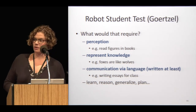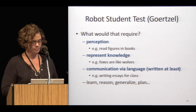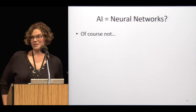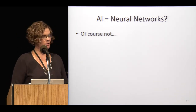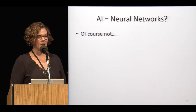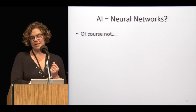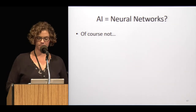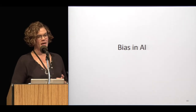We talked about three skills a robot would need to be a robot student: perception, representing knowledge, and communication via language. All I talked about was neural networks — is artificial intelligence just neural networks? Of course not. There are lots of other models in AI, but neural networks are certainly the flavor of the month, and it makes sense that people are trying to find what those neural networks have to do with actual brains.